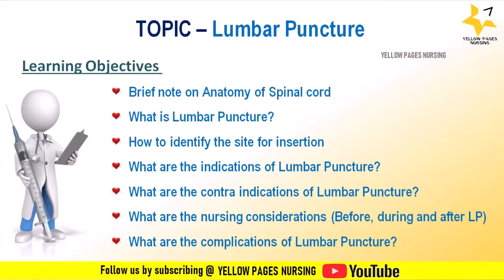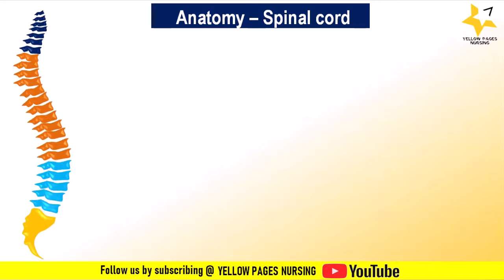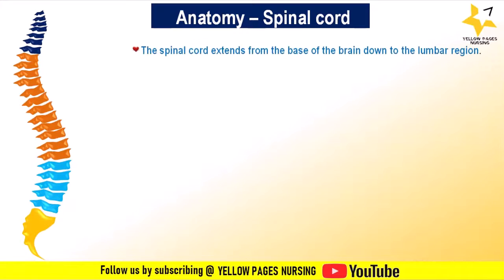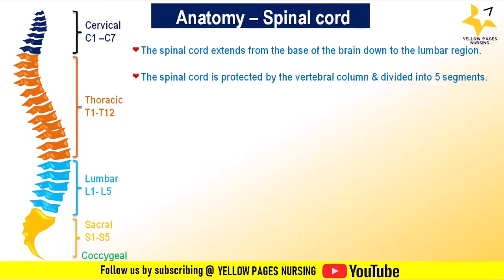Before starting lumbar puncture, we will see a quick review of the anatomy of the spinal cord. The spinal cord extends from the base of the brain (brainstem) down to the lumbar region. It is protected by the vertebral column and is divided into five segments: cervical, thoracic, lumbar — where the lumbar enlargement is a widened portion — then sacral and coccygeal regions.